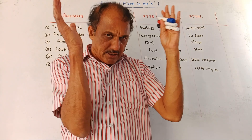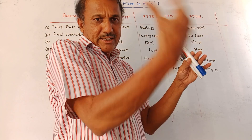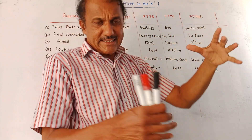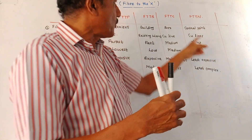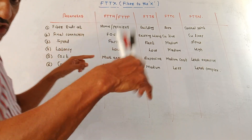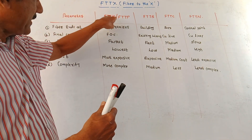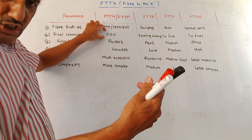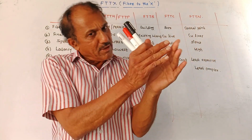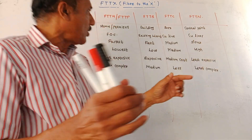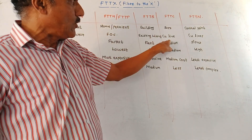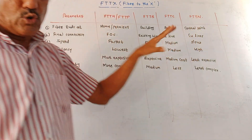In FTTC, there is a central cabinet that distributes data to different homes, so fiber ends at that box. In FTTN, there is a central point covering the entire neighborhood, so fiber ends at that central point. For the final connection to the end user: FTTH and FTTP use direct fiber optic cable; FTTB uses existing internal wiring; FTTC and FTTN both use copper lines for the final connection.